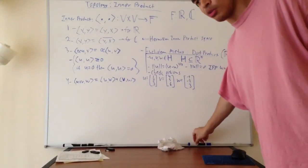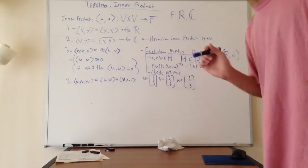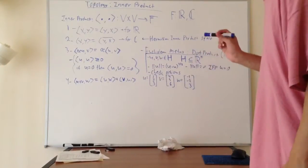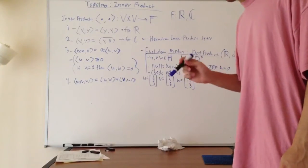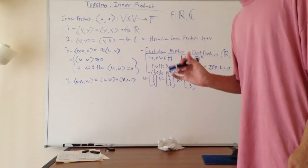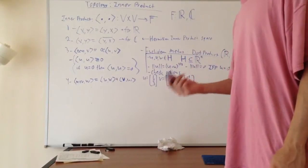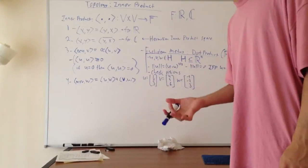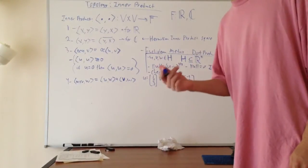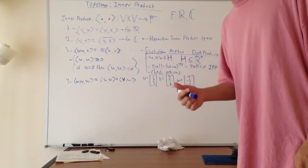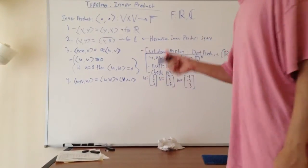This will be a continuation of my topology playlist, and in this video I'll be talking about the inner product. In my previous video I mentioned that the dot product is an example of the more general inner product. So this video I'll basically be explaining what an inner product is, and I'll also show that the dot product is indeed an inner product and prove that. So let's get right into it.